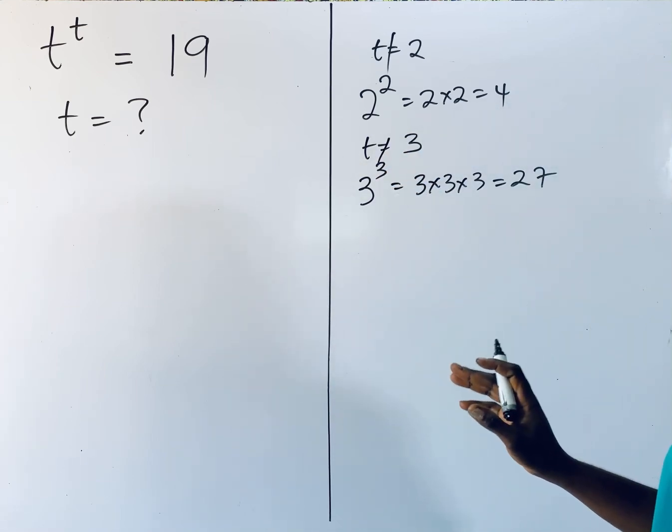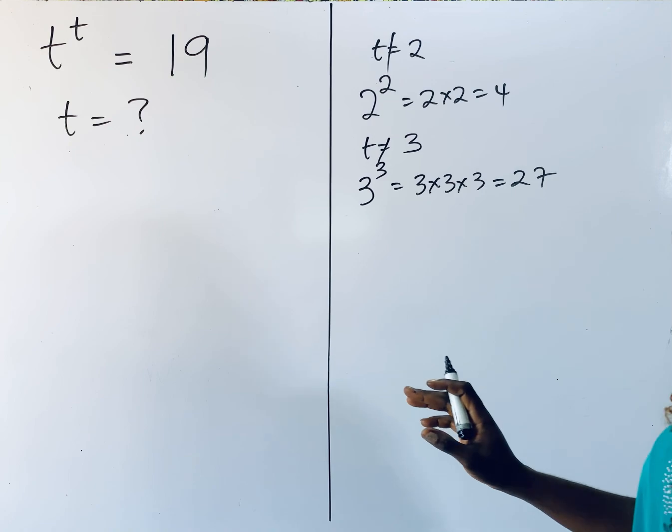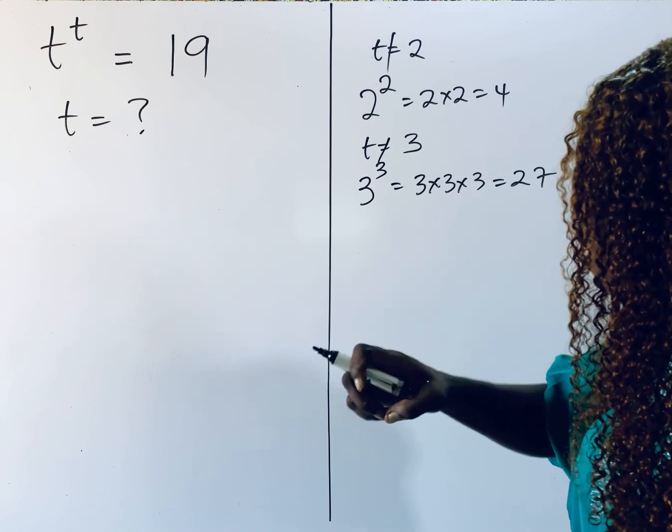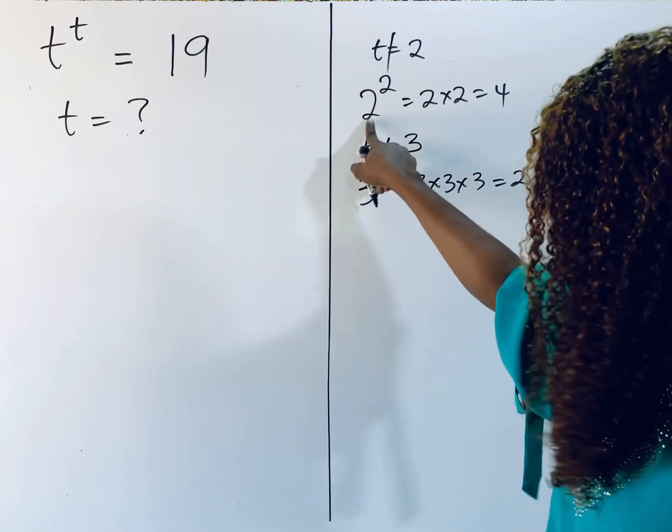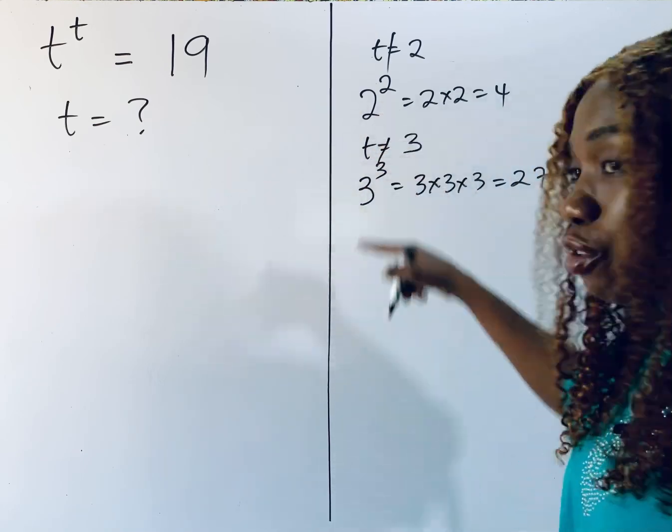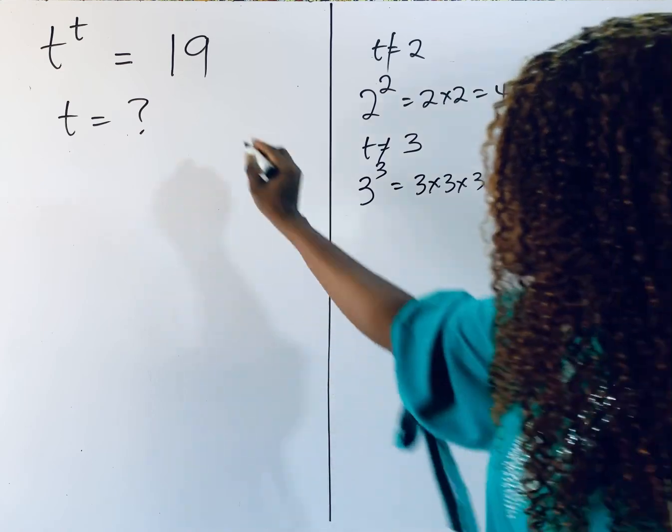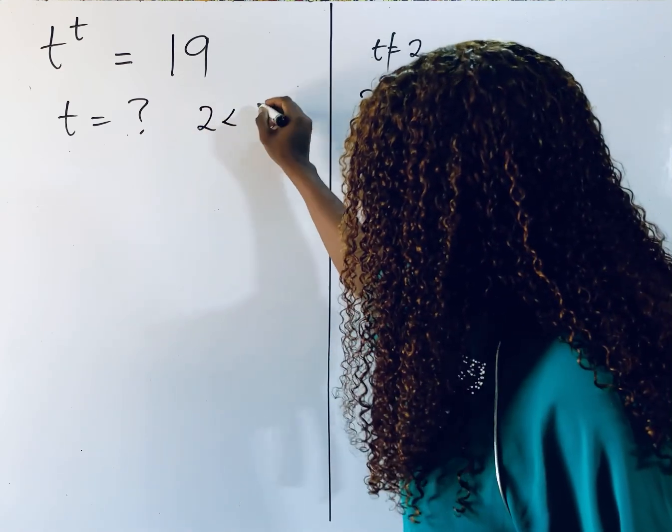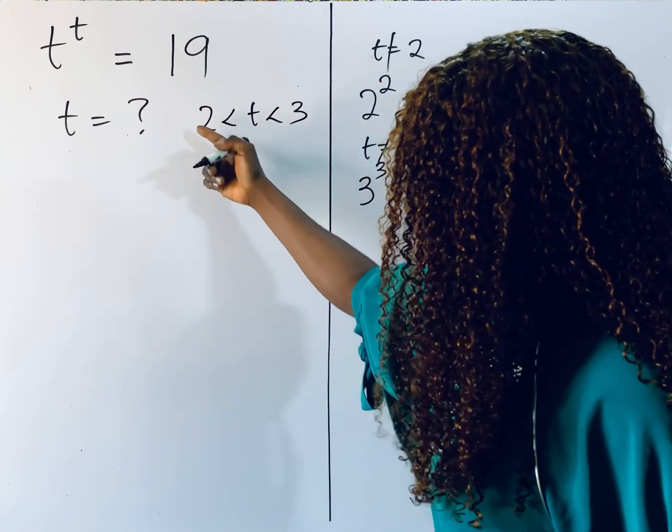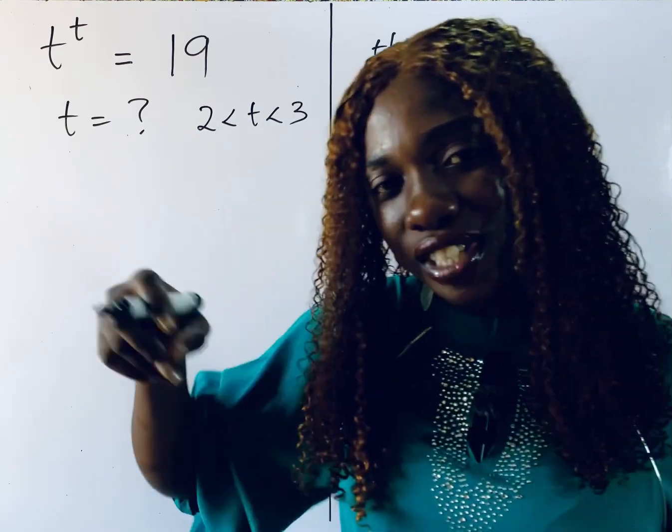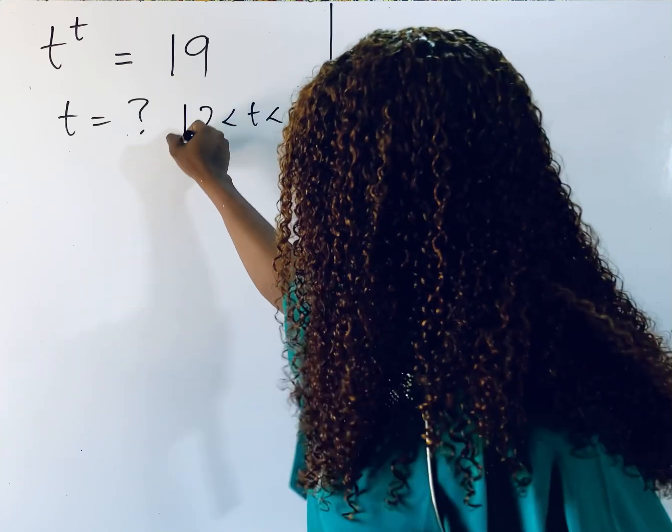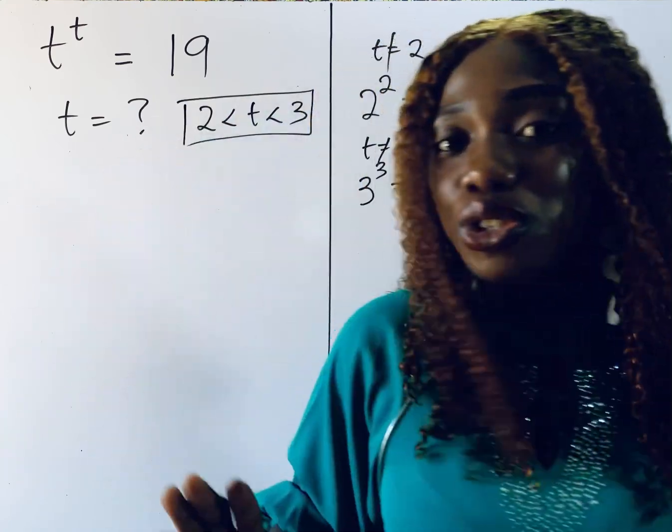So what it means is that if you observe carefully, you see that the value of t is within 2 and 3, in between 2 and 3. That is where you can find the value of t. We cannot give this as our answer. So we want to find the actual value of t. What do you do?